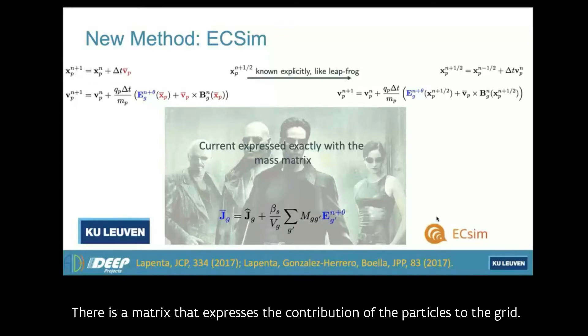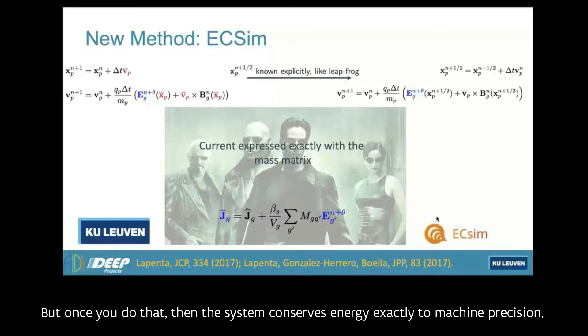There is a matrix that expresses the contribution of the particles to the grid. I'm not going to bore you with all the mathematical details, but it all boils down like the equation that is in the picture. So you have to build this big matrix. But once you do that, then the system conserves energy exactly to machine precision and there is no instability.